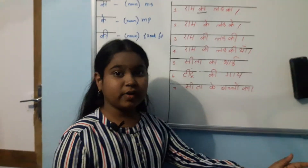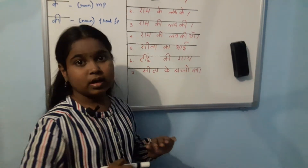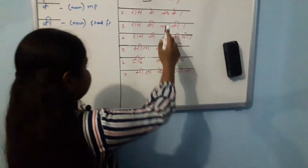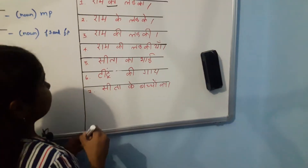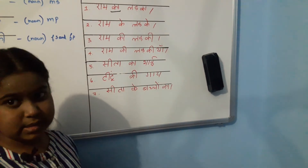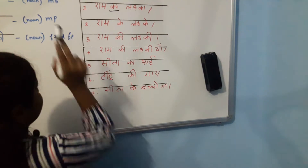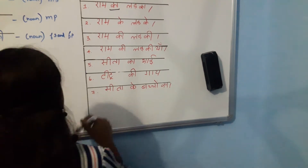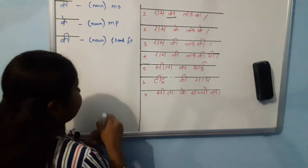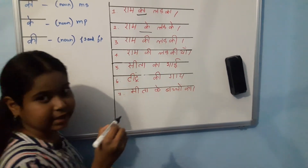Ram Kha Ladu Kha — meaning Ram's children, or sons. Here 'Ladu Kha' means boys, so this is masculine plural. Therefore 'Kha' is the possessive case ending used here.